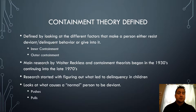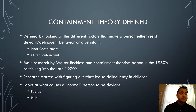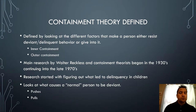The research started by figuring out what led to delinquency in children, and of course those children later become adults. Containment theory also looks at the pushes and the pulls that influence a person to be deviant.